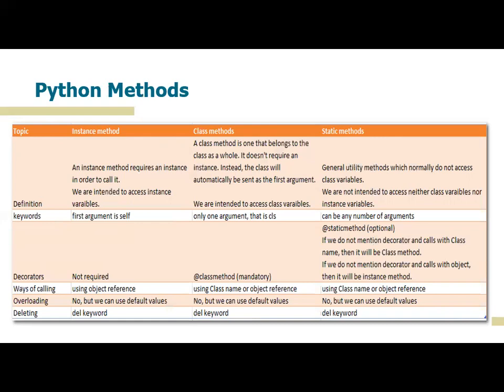Regarding decorators: a decorator is a separate topic, but for now consider it like an annotation in Java — it's an indicator to the Python VM that the method is different from others. For instance methods we normally don't use any decorators. For class methods we use the '@classmethod' decorator and it is mandatory. For static methods we use '@staticmethod', which is conventional and optional, but for good coding practice you should mention it.